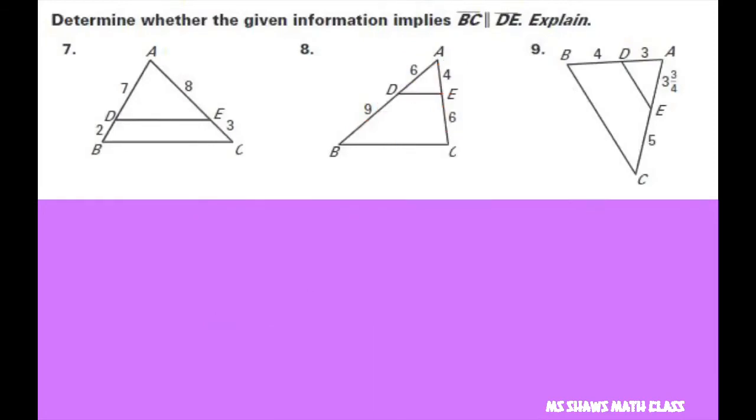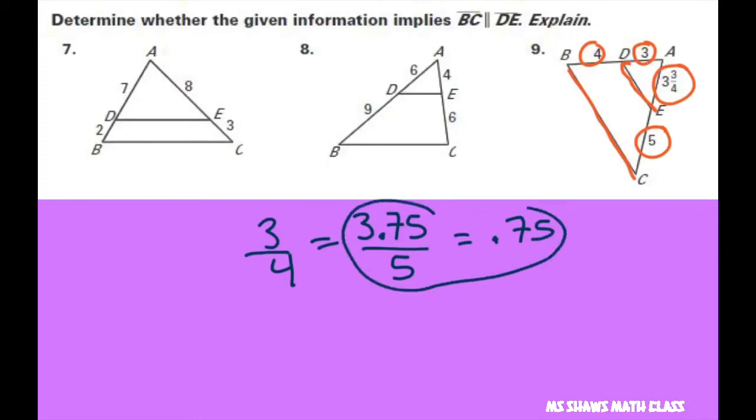And finally, we're going to check these two for parallel. So we can try 3 is to 4 as 3 and 3 fourths is to 5. I'll just put 3.75 is to 5. If you want to check that out, put it in your calculator. 3.75 divided by 5, and that gives you .75, that equals .75, which equals 3 fourths. So since the proportionality are the same, it means these two lines are parallel.